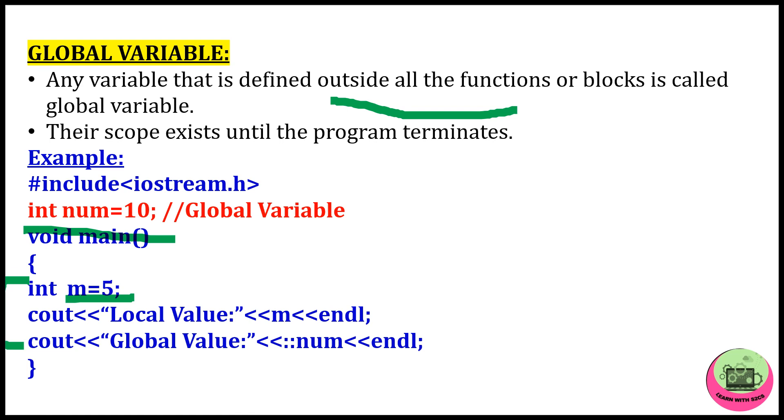So if you try to print m, you will get the value 5. And if you try to print num using scope resolution operator—now what this operator does, we will cover it in our next topic—now we just understand we are accessing the global value num through this operator. So I hope you are clear about local variable and global variable.